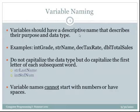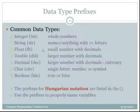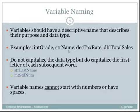Variables should always have a descriptive name that describes whatever the purpose of that variable is, as well as the data type. For example, int grade, string name, decimal tax rate, DBL total sales. Make sure that you do not capitalize the data type. Use all lower prefix letters and only capitalize the first letter of each subsequent word or part of a word.